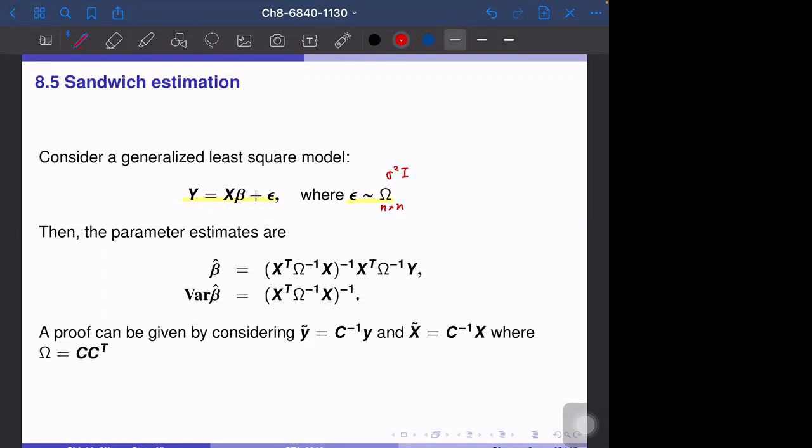In this case, beta hat is actually derived as this. You can derive this in the same way as usual linear regression. If omega equals sigma square times i, this simplifies to x transposed x inverse x transposed y. To derive this, we can make transformation of c and x by multiplying the matrix c inverse, where c times c transposed equals omega.